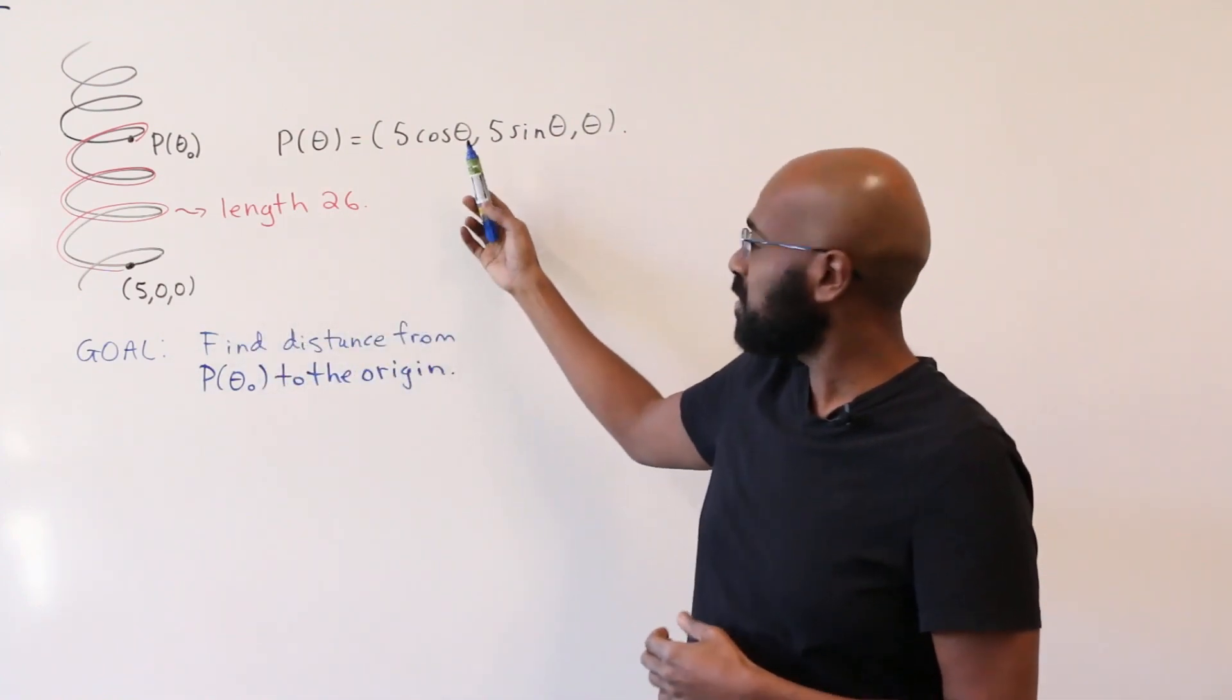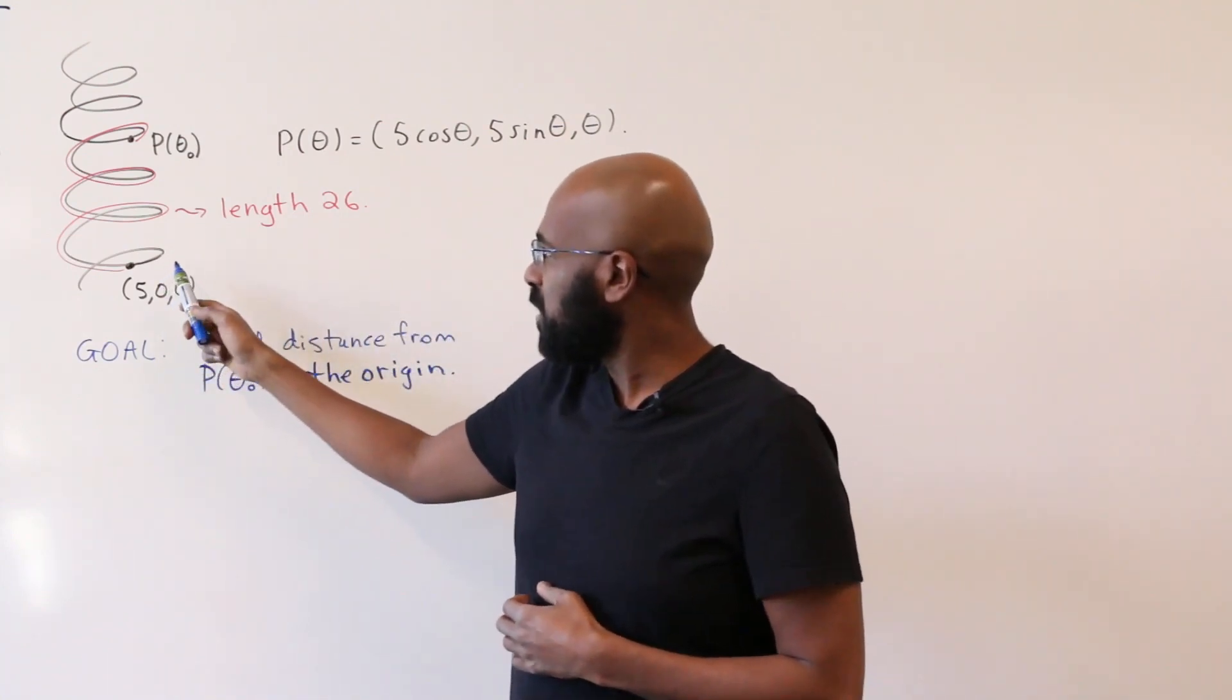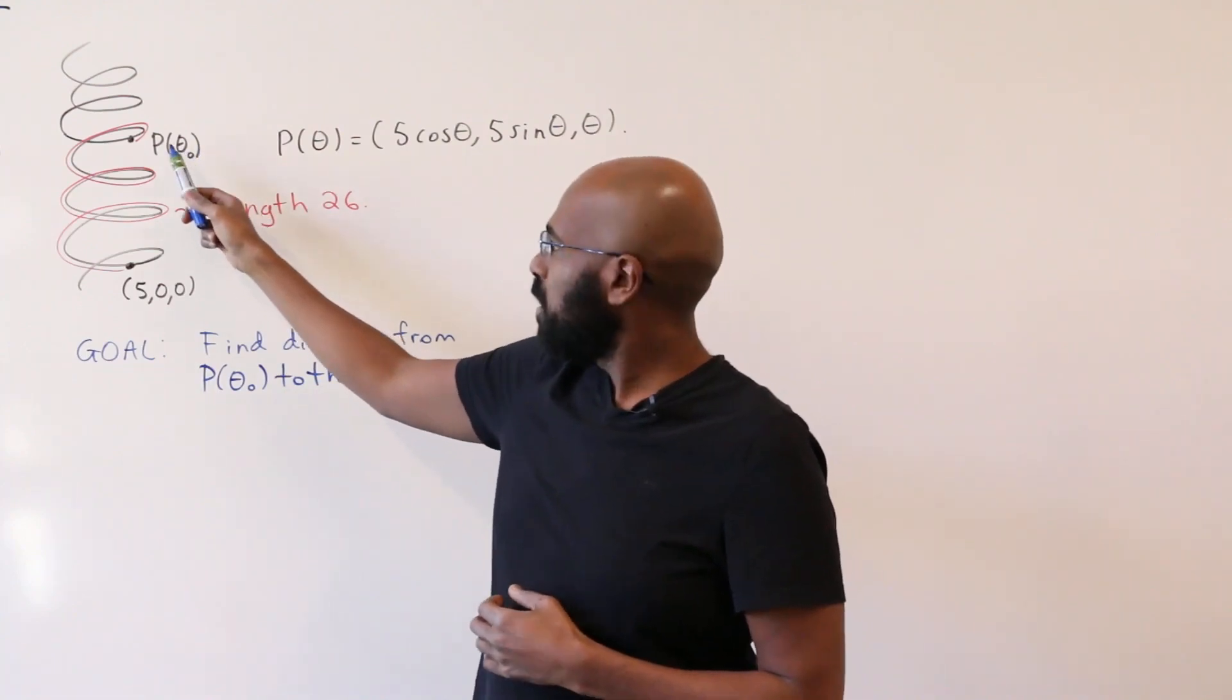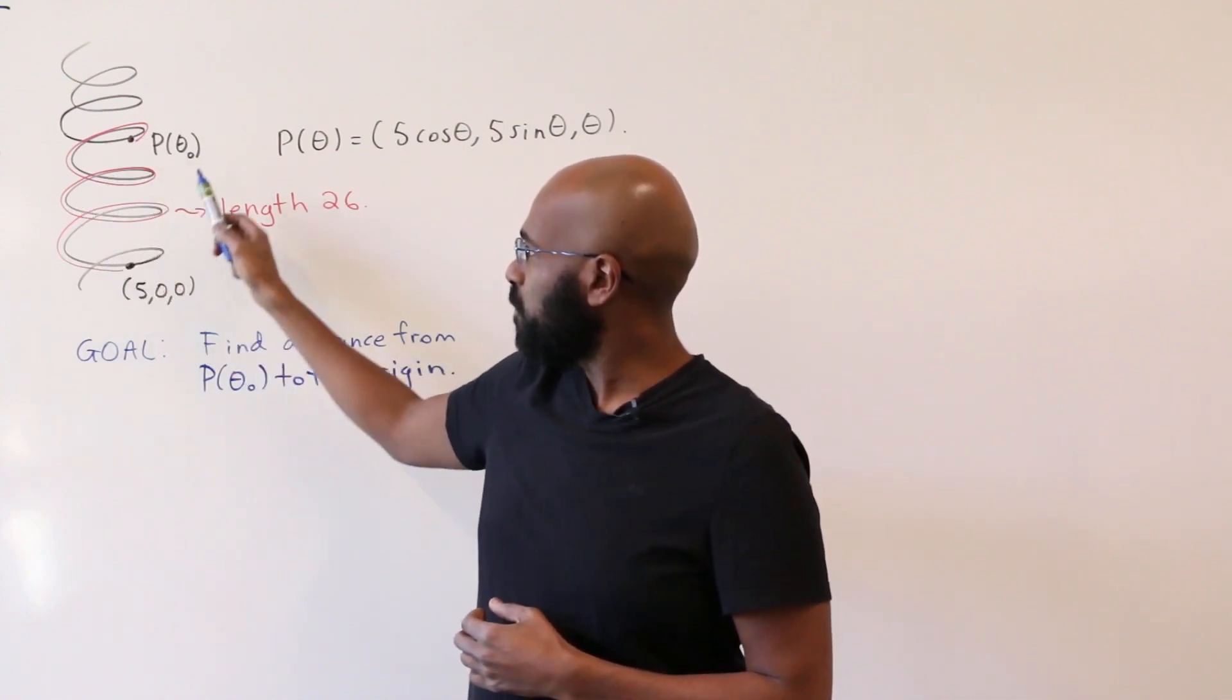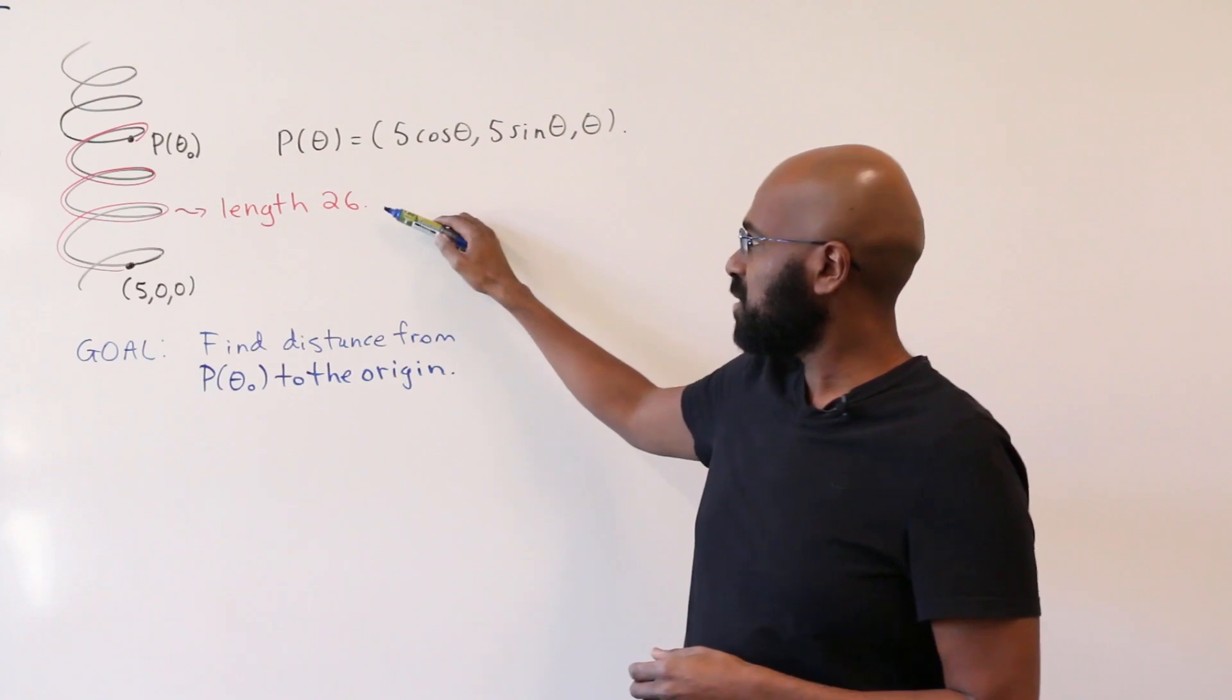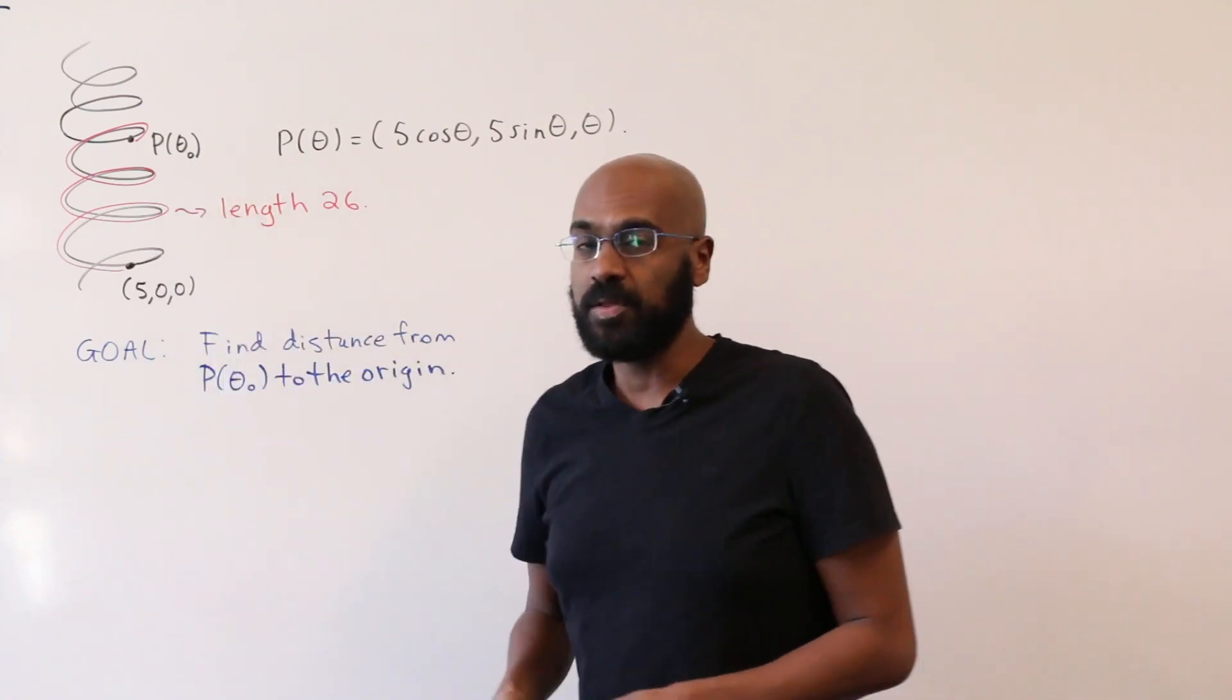The helix has parametric equations given as follows, and the information you're given is that there's a point P of theta naught and the distance, or the length along the helix from P of theta naught to the point (5,0,0) is 26. Then it asks for the distance from this point to the origin.